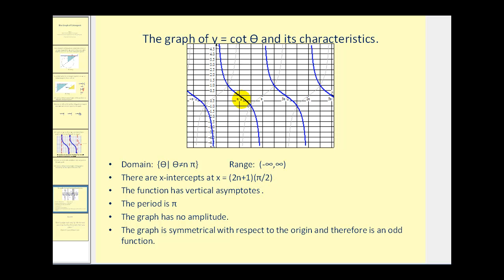The x-intercepts occur at odd multiples of pi over two, like pi over two, three pi over two, and so on. The function has vertical asymptotes. The period is pi radians. There is no amplitude. The graph is symmetrical with respect to the origin and therefore is an odd function.